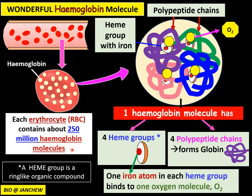If one erythrocyte has 250 million hemoglobin molecules, you multiply by four to find how many oxygen molecules it can transport. To recap: in the red blood cells there are many hemoglobin molecules; each has four polypeptide chains and four haem groups; each haem group contains an iron atom which binds to one oxygen molecule — that is the structure of the hemoglobin molecule.